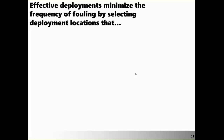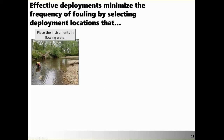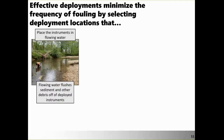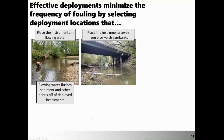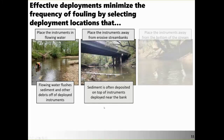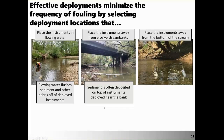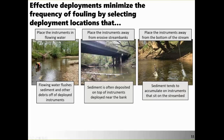The first thing we can do to minimize fouling is to select a deployment location that places the instrument in flowing water. Not only does flowing water often contain the most representative water chemistry, but it allows instruments to self-clean with less chance of sediment accumulating on the probes. We want to find a location far from erosive stream banks and in a mechanism that keeps the instruments off the stream bottom.